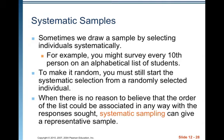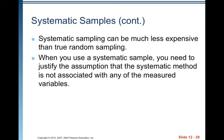Systematic samples. Sometimes we draw a sample by selecting individuals systematically. For example, you might survey every tenth person on an alphabetical list of students. To make it random, you must start the systematic selection from a randomly selected individual. When there is no reason to believe that the order of the list could be associated with the responses sought, systematic sampling can give a representative sample. Systematic sampling can be much less expensive than true random sampling, but you need to justify the assumption that the systematic method is not associated with any measured variables, and sometimes that can be tricky. So this is typically not people's first choice of sampling methods.